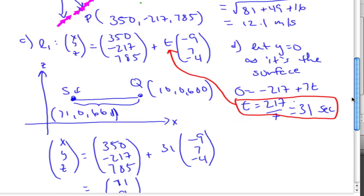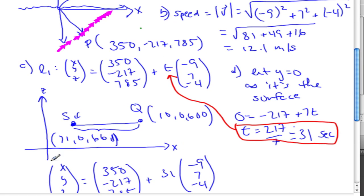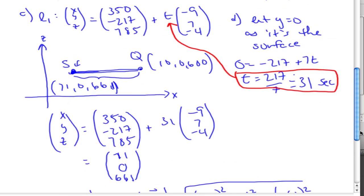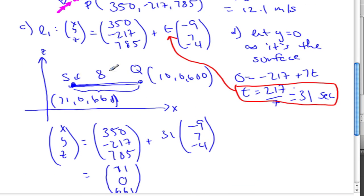So the submarine comes up to the surface in 31 seconds at position (71, 0, 661), and is 86.3 meters away from Q.